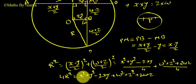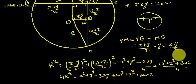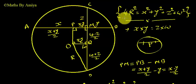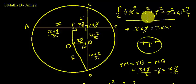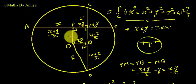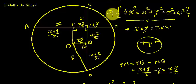Therefore, 4r² = x² + y² + w² + z². Whenever we have a circle and two mutually perpendicular chords, the formula for the radius is 4r² = x² + y² + z² + w². I hope it is clear. This is our deduction and this is our final output.